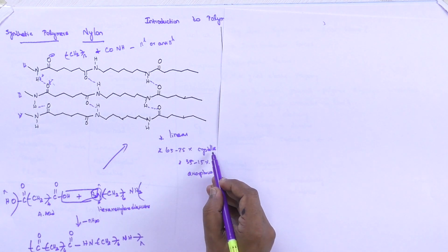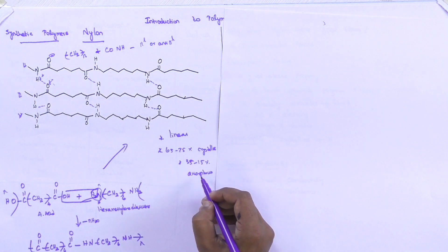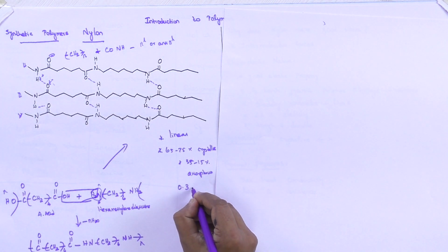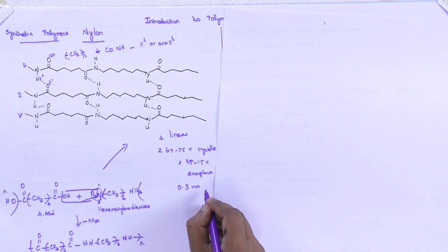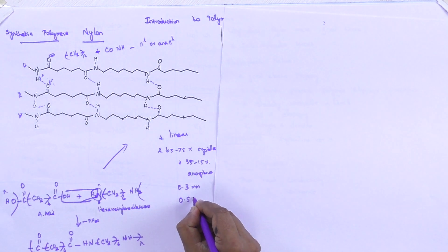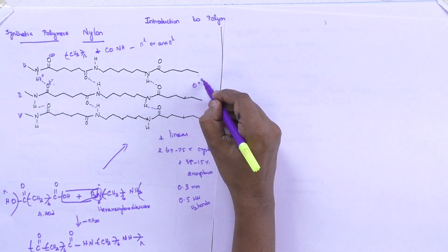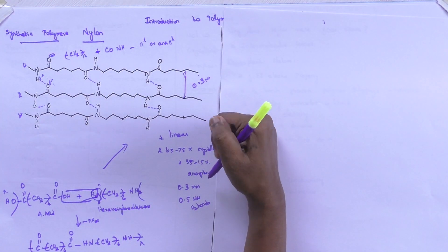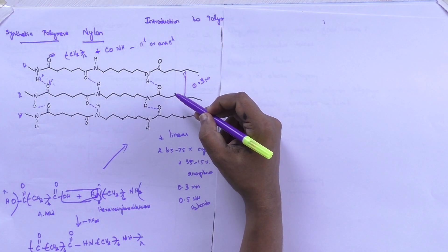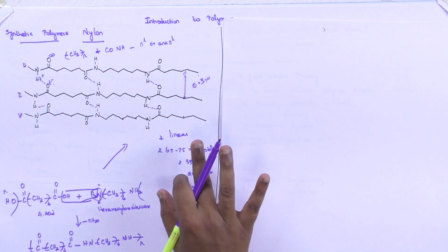The amorphous character is 35 to 15 percent, so the crystalline character is very much more compared to the amorphous character. The interchain polymer distance is also short — about 0.3 nanometers only — and hydrogen bonds can be formed across a maximum interpolymeric distance of up to 0.5 nanometers. As the chain distance is only 0.3 nanometers, the hydrogen bonds formed are very strong, compared to the cotton system.